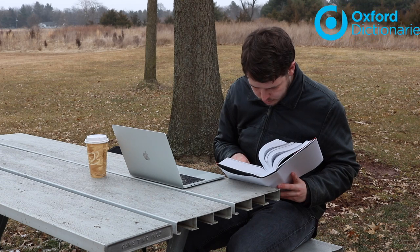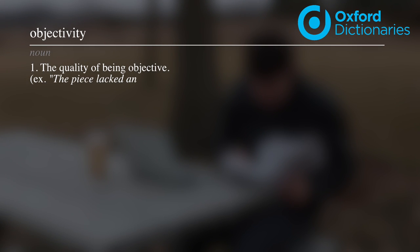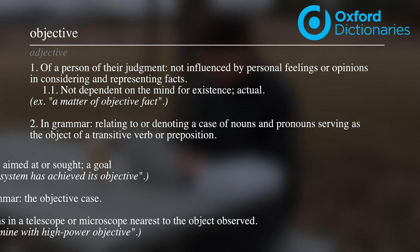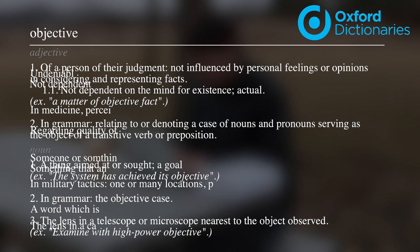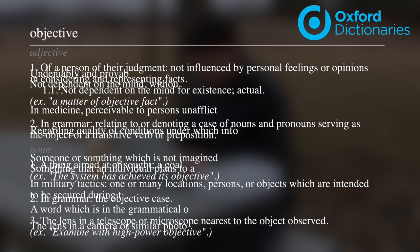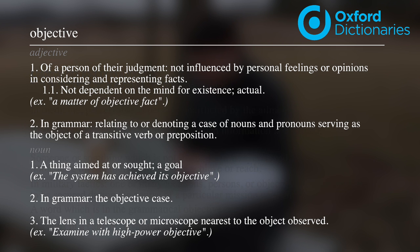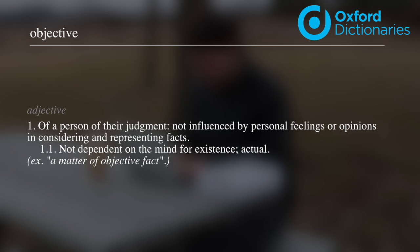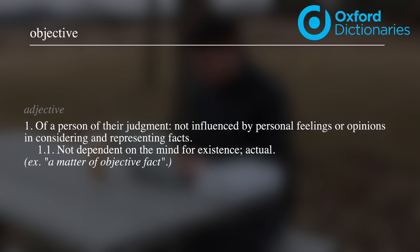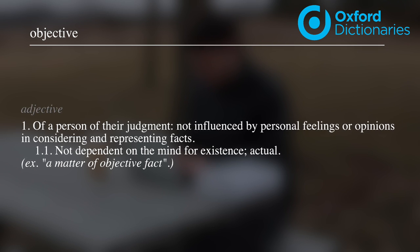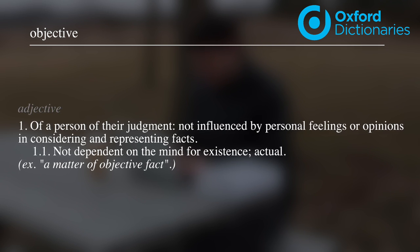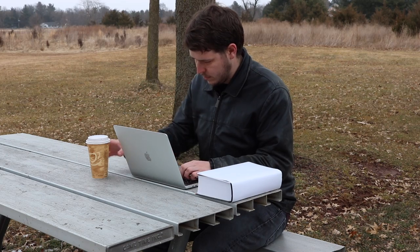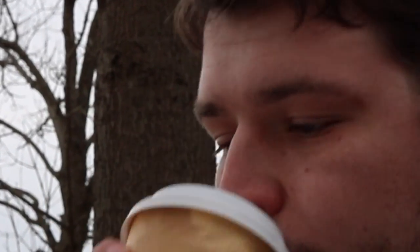According to the Oxford English Dictionary, the word objectivity is a noun derived from the word objective, which can be used as either a noun in three different ways or as an adjective in two different ways. These aren't the only applications of the word — if the Oxford English Dictionary included every possible meaning, you wouldn't be able to hold the book. But according to Oxford, these five definitions are the ones that matter most. The first definition states that objective, when used in reference to a person or their judgment, means they are not influenced by personal feelings or opinions in considering and reporting facts. So if news media wants to be objective, they should completely remove all personal feelings and opinions when writing their stories. That should be easy, right?